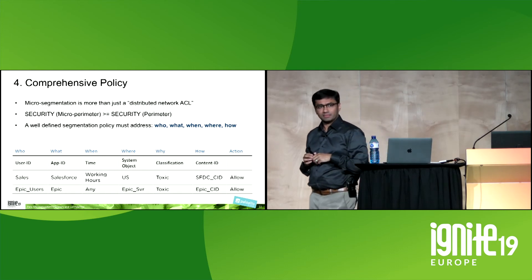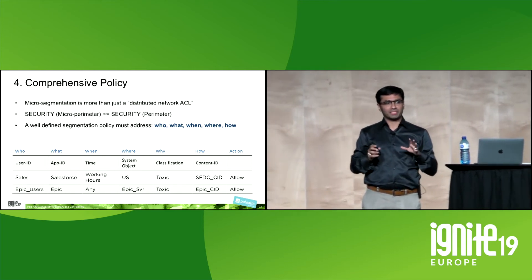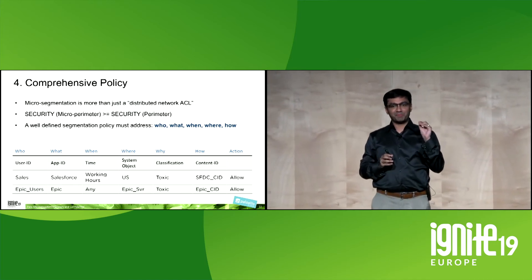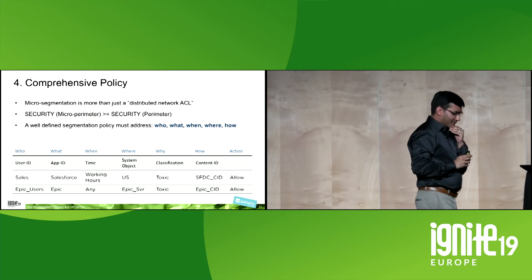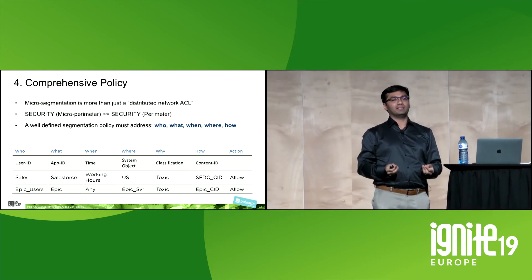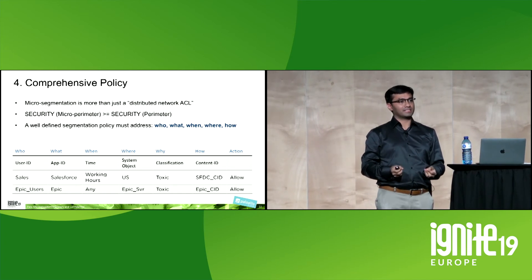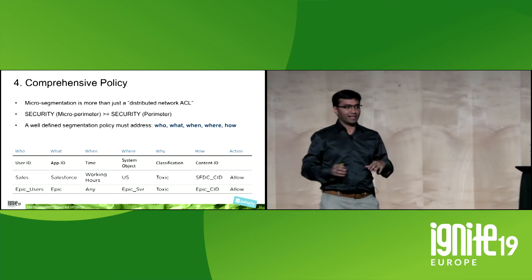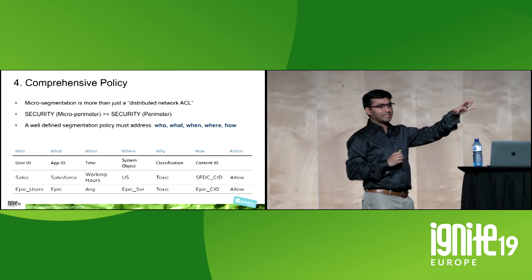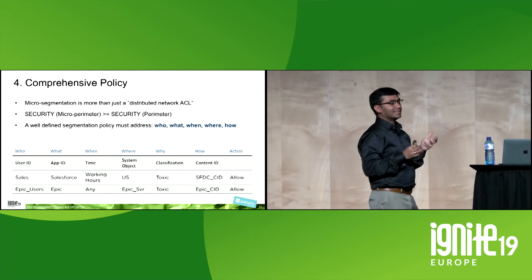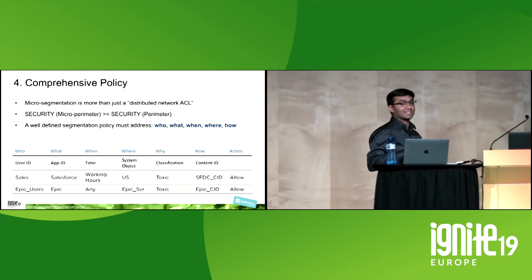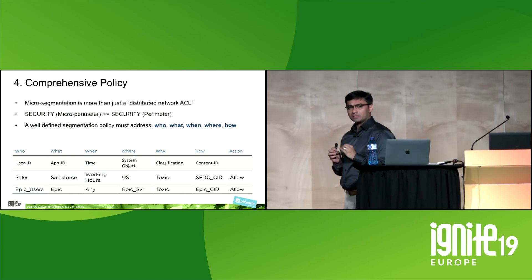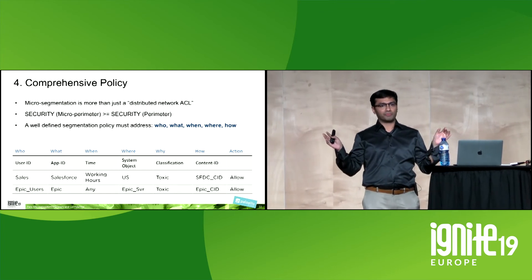The fourth block is comprehensive policy. The networking industry abuses the word policy — the only definition many knew was A can or cannot talk to B. That's not a true policy definition. When I came to Palo Alto Networks, I realized the true definition. Micro-segmentation is more than a distributed way of enforcing access control lists. An allow/deny policy is just an ACL. It is not true security.